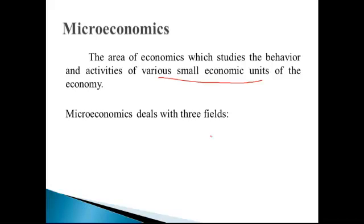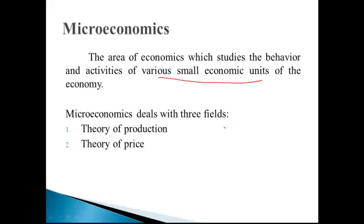Basically, microeconomics deals with three fields. One is theory of production. Theory of production में हम देखते हैं कि कैसे goods और services produce हो रही हैं, इनकी production में कौन-कौन से factors of production use हो रहे हैं, producers क्यूं और कैसे ये decide कर रहे हैं कि techniques of production कौन-कौन से use हों, और how these techniques are affecting cost of production. इसके इलावा firm का क्या behavior है regarding production of goods and services — ये सारी वो चीज़ें हैं जो हम theory of production में discuss करते हैं.